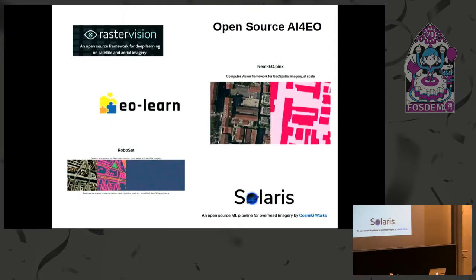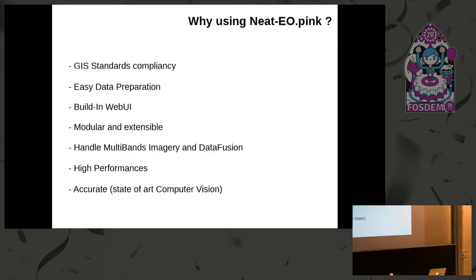There are alternative open-source projects: Raster Vision, your Learn, RoboSat, and Solaris. Why choose this one? We really focus on compliance — it's easy and standards-compliant to reuse all the geospatial data formats you work with daily. Data preparation will be easy and fast. There is a built-in web UI interface to check at every step that everything is fine. It's modular and extensible — you can easily add new tools, new interfaces, and new templates.